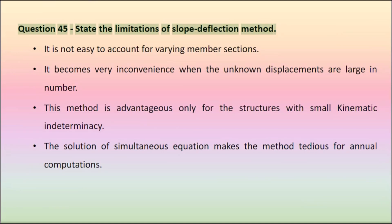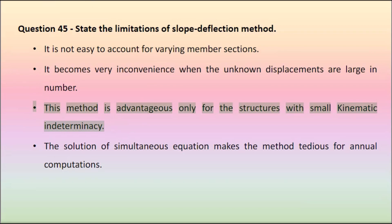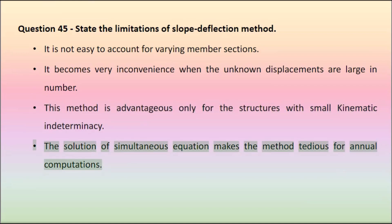Question 45: State the limitations of slope deflection method. It is not easy to account for varying member sections. It becomes very inconvenient when the unknown displacements are large in number. This method is advantageous only for structures with small kinematic indeterminacy. The solution of simultaneous equations makes the method tedious for manual computations.